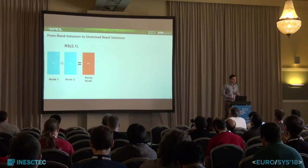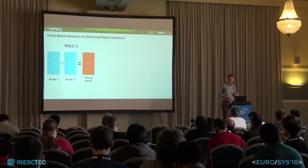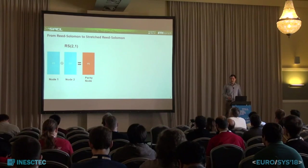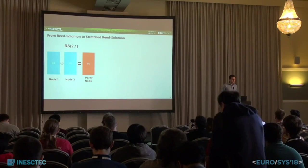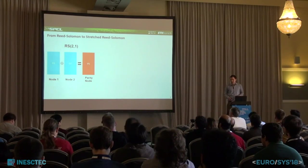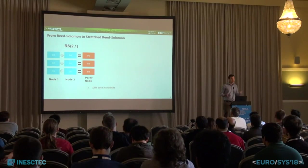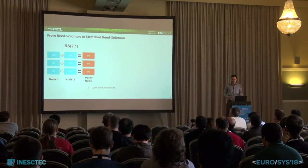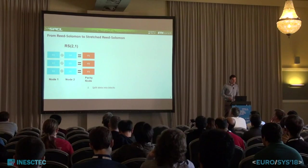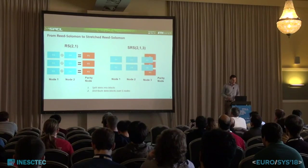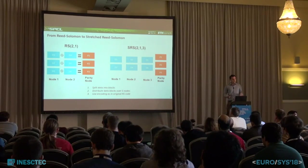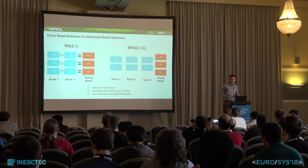In Reed-Solomon 2+1, we have two data nodes and one parity node. The data on the parity node equals the XOR of data on nodes 1 and 2, so D1 + D2 = P1. This gives us only two key shards. If we want three key shards, we propose to split the data — this doesn't change the coding, it just changes the granularity of updates. The data stored is exactly the same, but we distribute the blocks over as many machines as we want — in this case, three. Every machine then gets two blocks instead of three. The key idea is to preserve the coding scheme, so Stretched Reed-Solomon inherits all properties of the original Reed-Solomon.